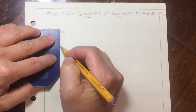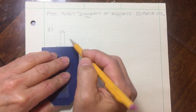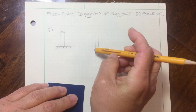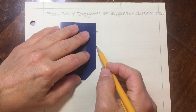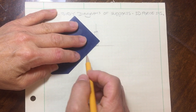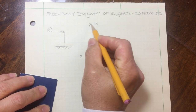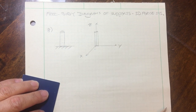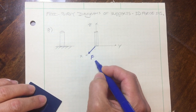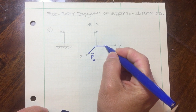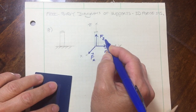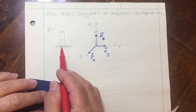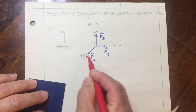Number eight: a fixed support — for example, a rod that is welded to a surface. The free body diagram for that rod, after removing the support, uses the Z, Y, and X axes. This fixed support prevents the rod from translating in each of the directions X, Y, and Z, so there will be reaction forces in each of those directions. The fixed support also prevents rotation about Z, X, and Y, so we will have reaction moments about each of those axes.